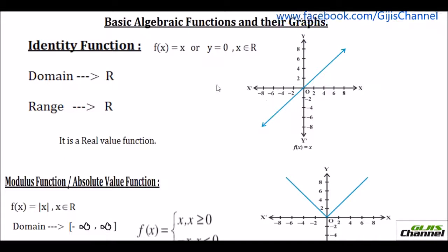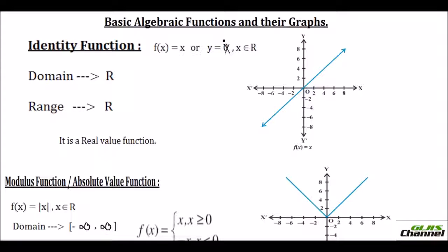You are probably most familiar with the identity function. The identity function is when you get your y value and the x value the same. So here your f of x, which is otherwise also known as y, your f of x is equal to x, or your y is equal to x, where x is all real numbers. The identity function shows a real value function and it is a straight line passing through the origin. When you graph it, it is called identity function because whatever value x takes, y also has the same value.